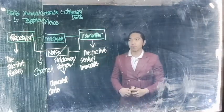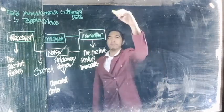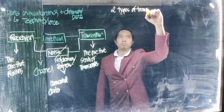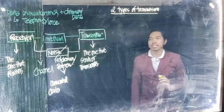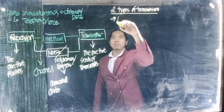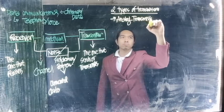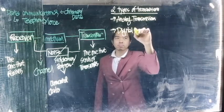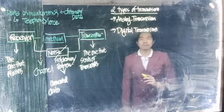So since we're talking about data communication at this level, it's also essential to know what are the two types of transmission. Meron tayong dalawang klase ng transmission sa isang data communication network: analog transmission and digital transmission.